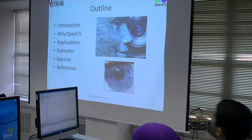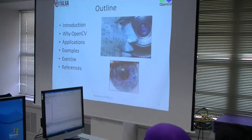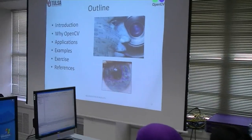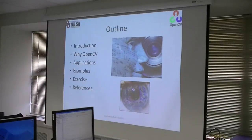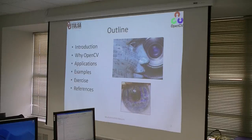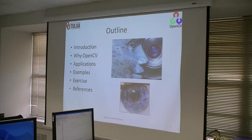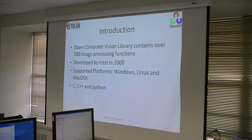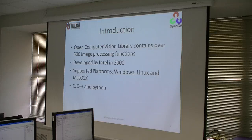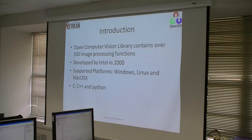So first we're going to go through a small introduction: what is OpenCV and why do we need OpenCV. We'll go through some applications and examples, the main functions of OpenCV, then an exercise, and some references at the end. So OpenCV is an Open Computer Vision Library. It was developed by Intel starting in 2000, and they came up with version 1.0, and now we're at version 2.1.